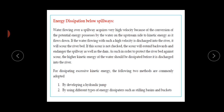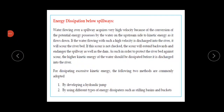If the water flowing with such high velocity is discharged into the river, it will scour the riverbed. If the scour is not checked, it will extend backwards and endanger the spillway as well as the dam. To protect the riverbed against scour, the higher kinetic energy of the water should be dissipated before it is discharged into the river. Two methods are mainly adopted: one is by developing a hydraulic jump and another is by using different types of energy dissipators such as stilling basins and buckets.